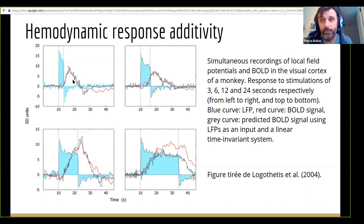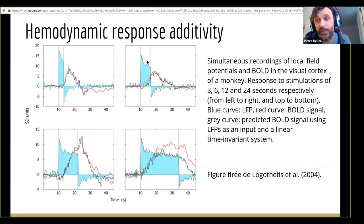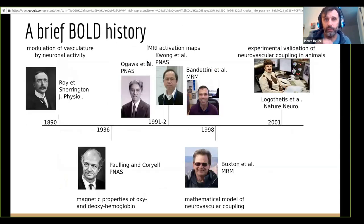Bear in mind the input is the LFP activity, which could almost be approximated as a boxcar function — you just turn it on and off based on whether you're stimulating. Even if we didn't have the LFP measures, just by knowing what tasks we did and when, we could have predicted those responses pretty accurately. And that was exactly what the popular software SPM — statistical parametric maps — does: it makes this kind of assumption and predicts BOLD activity based on experimental design.